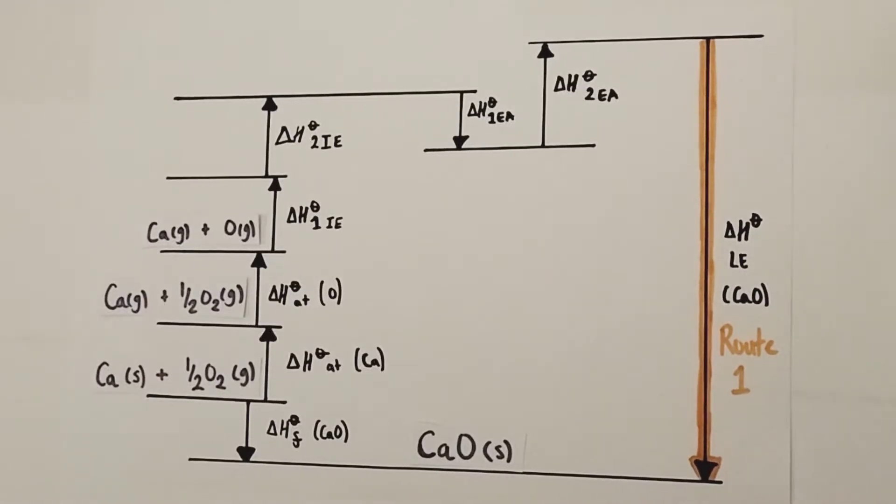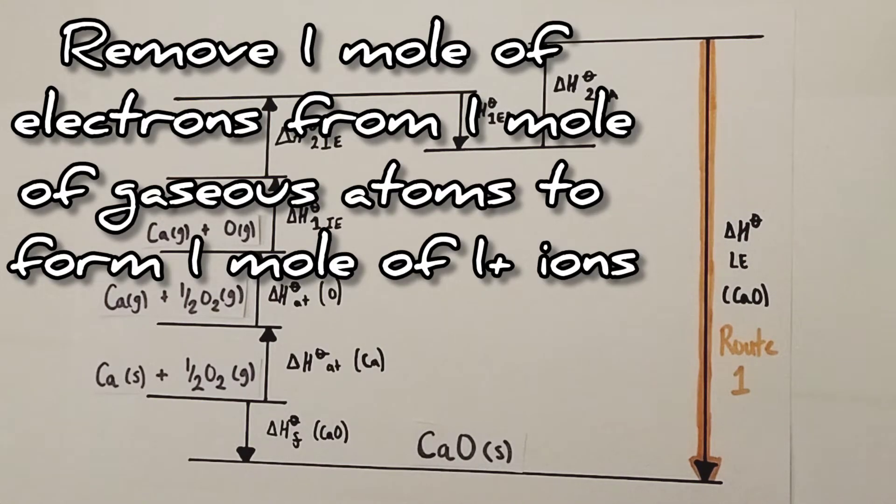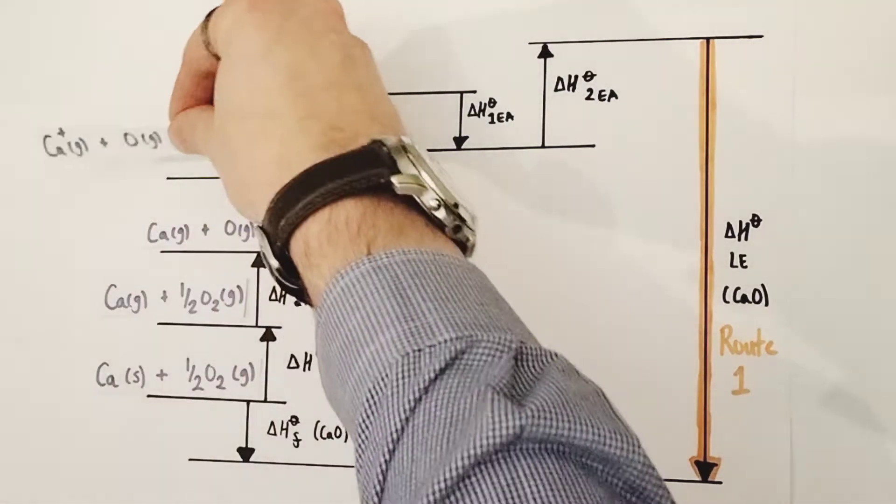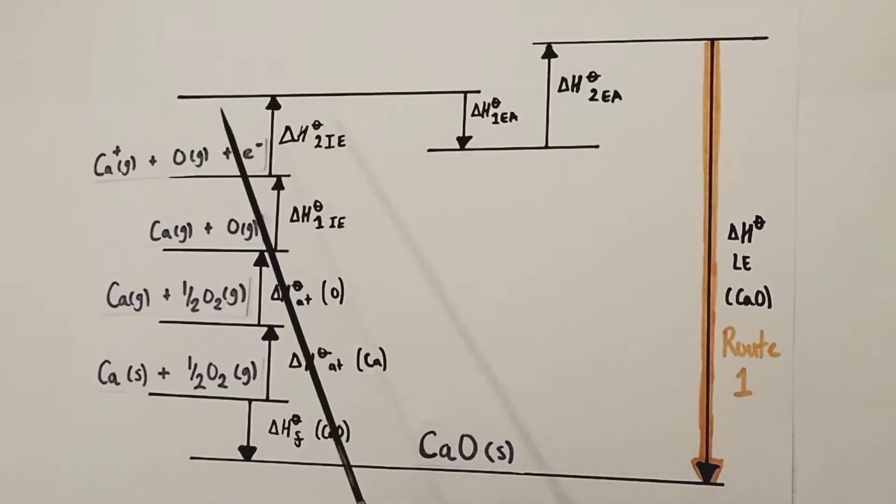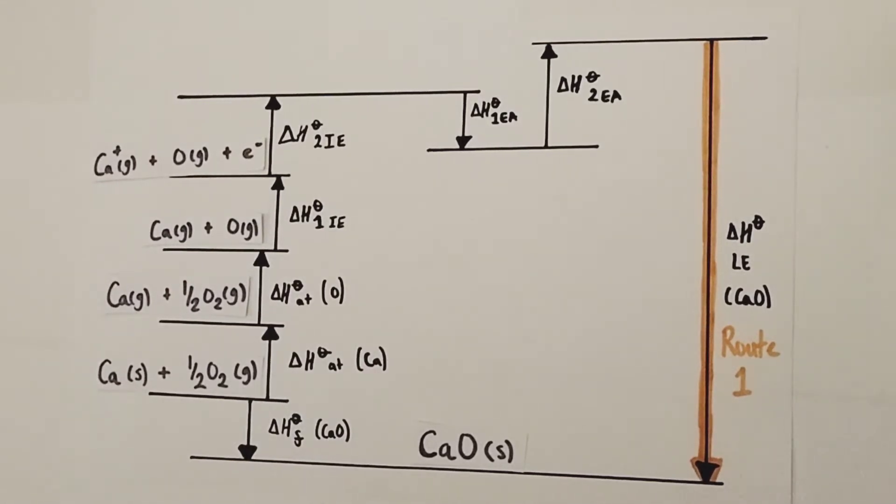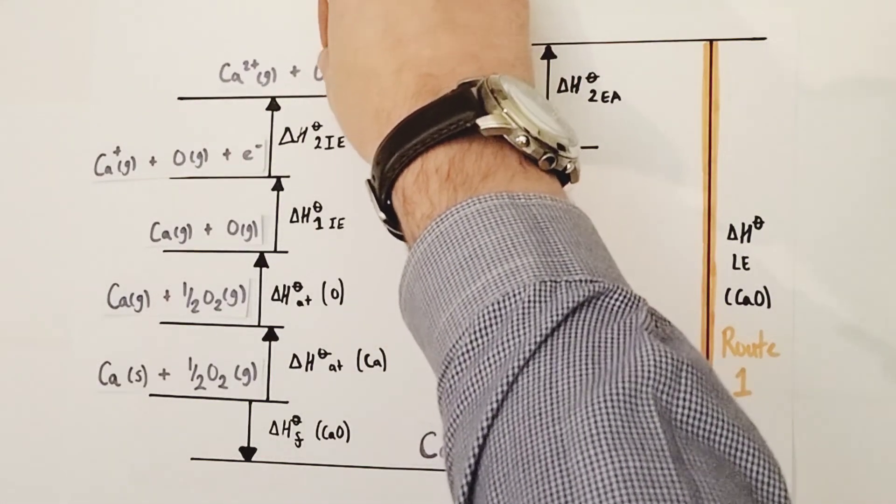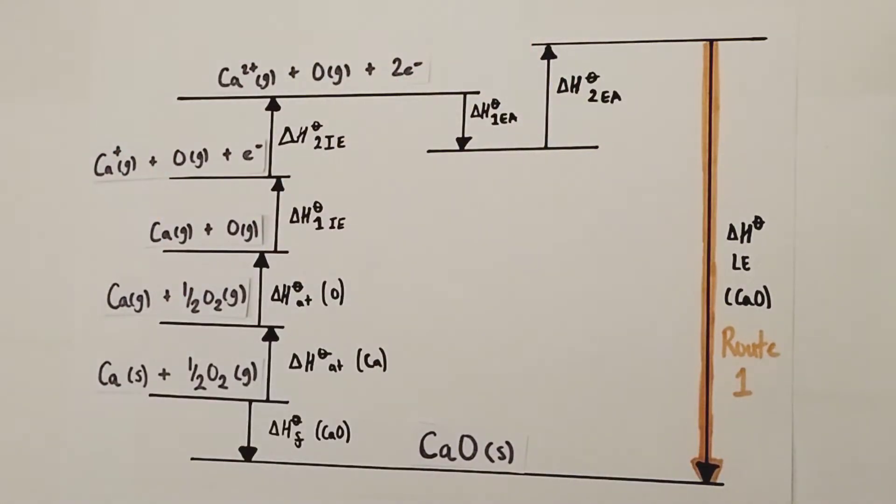Now on to the ion stage. The first thing up is the first ionization energy, the enthalpy change for the removal of one mole of electrons from one mole of gaseous atoms to form one mole of plus one ions. There is my one mole of electrons being stripped away to form my one mole of calcium plus one ions. Since ionization energy is a successive process, next up is the second ionization energy, which will remove yet another mole of electrons to form two plus calcium ions. Two moles of electrons are now removed, and calcium two plus ions have been formed.